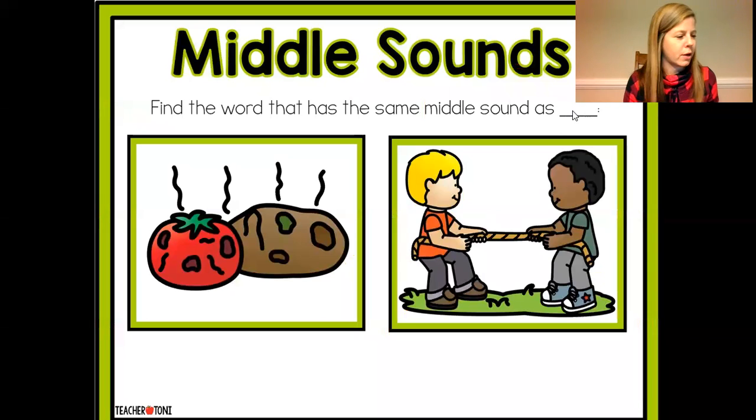Okay, middle sounds. The word is top. T-o-o-o-p. What vowel says o-o-o? O, right? Short O says o.